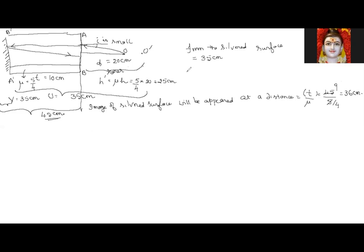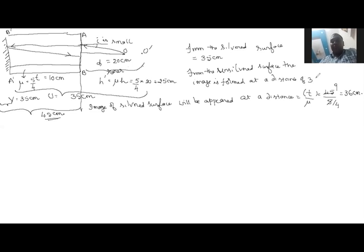Second answer: from the unsilvered surface, the image is formed at a distance of 36 centimeters. This completes the silvered glass slab model.